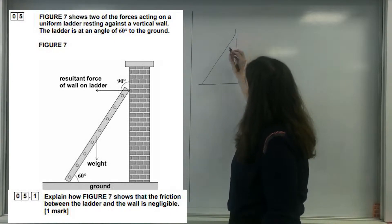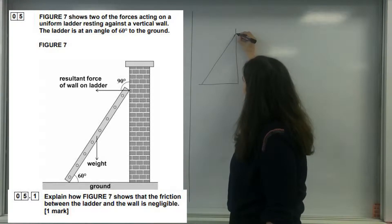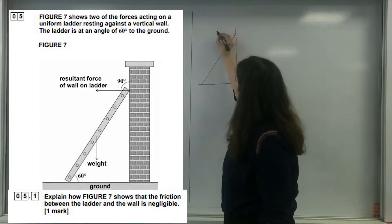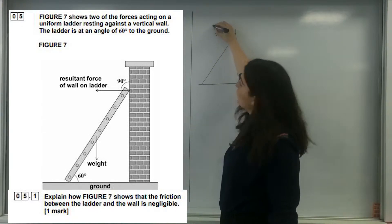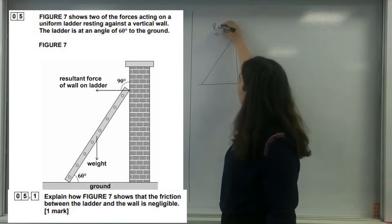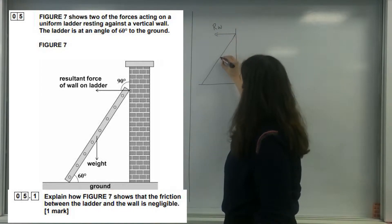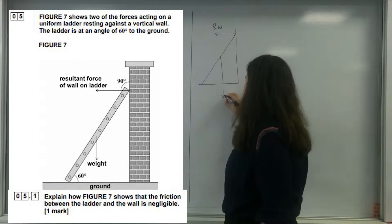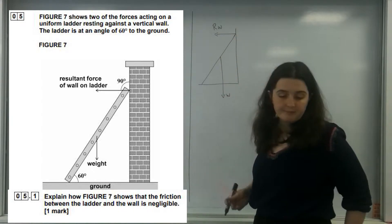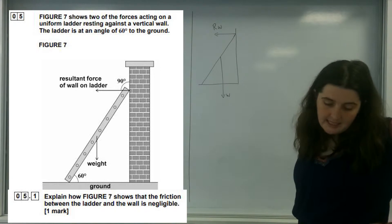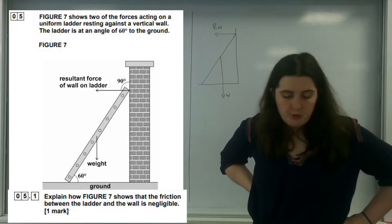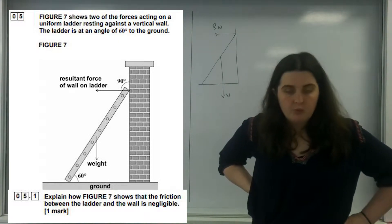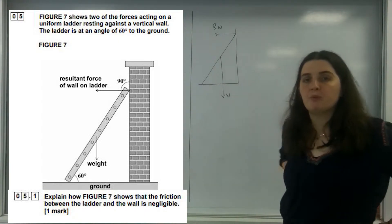So I've got my weight acting down, I've got the resultant here — I'm going to call this the resultant of the wall. I've got my weight going down, and it says: why do I think the friction between the ladder and the wall is negligible?